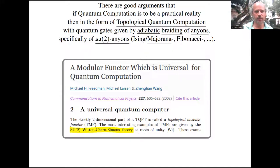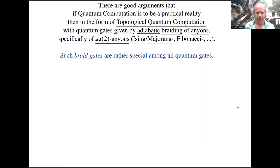You need it apparently most prominently for the gauge group SU(2). Mathematicians speak of SU(2) Chern-Simons-Witten theory. Physicists label the anyons Ising, Majorana, Fibonacci, and so forth. In any case, it is such braid gates that would realize topological quantum computation.